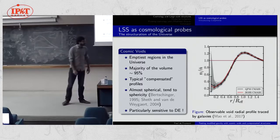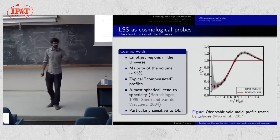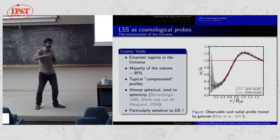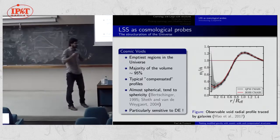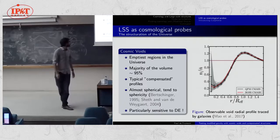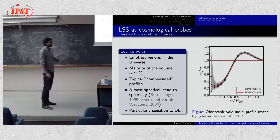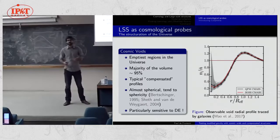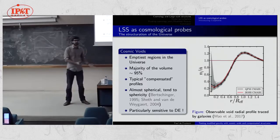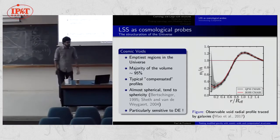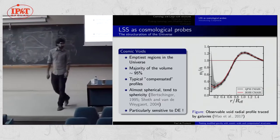What is interesting with these objects is that they tend to sphericity during their evolution, whereas over-dense regions increase their ellipticity during collapse. Also, these regions are known to be particularly sensitive to dark energy and modified gravity, because you don't have the very large baryonic effects present in galaxy clusters. So these regions are expected to be good probes for dark energy and modified gravity.